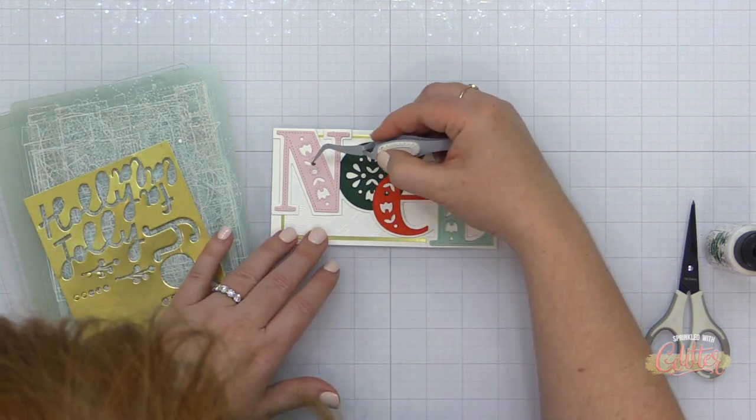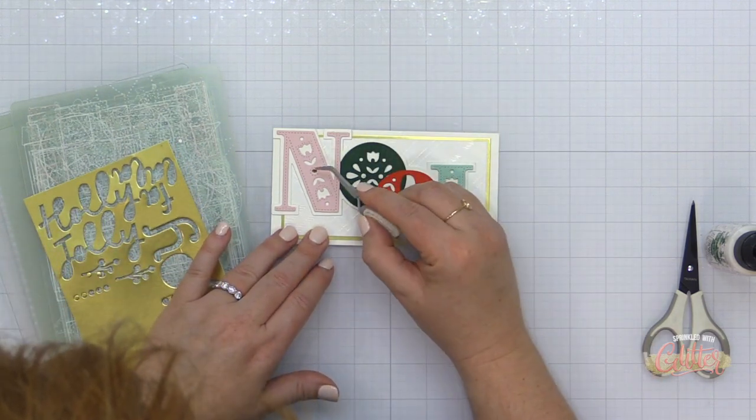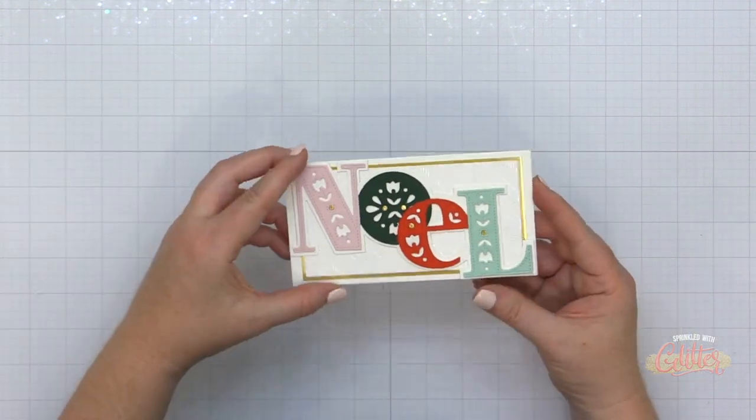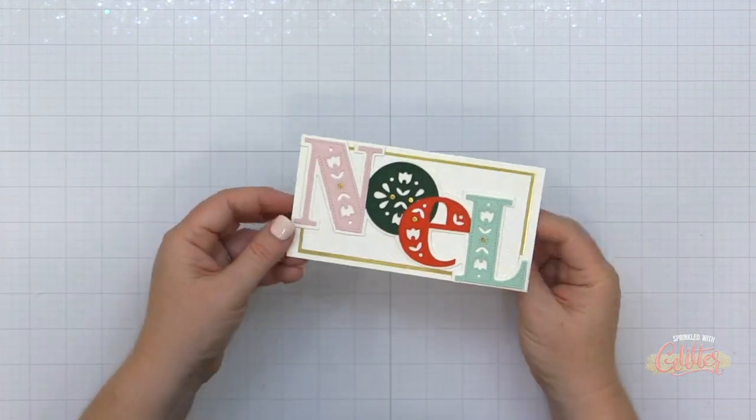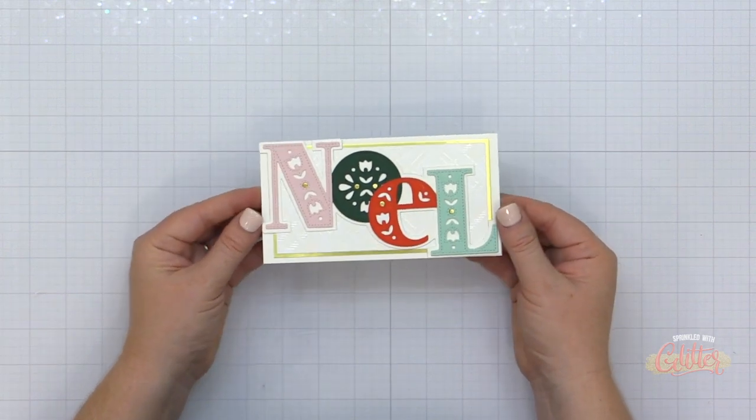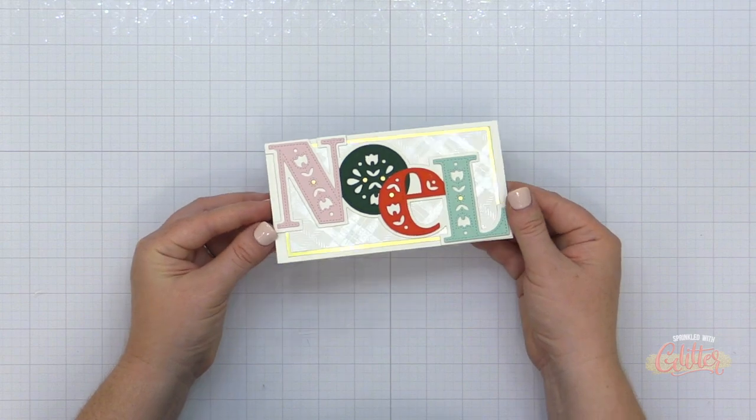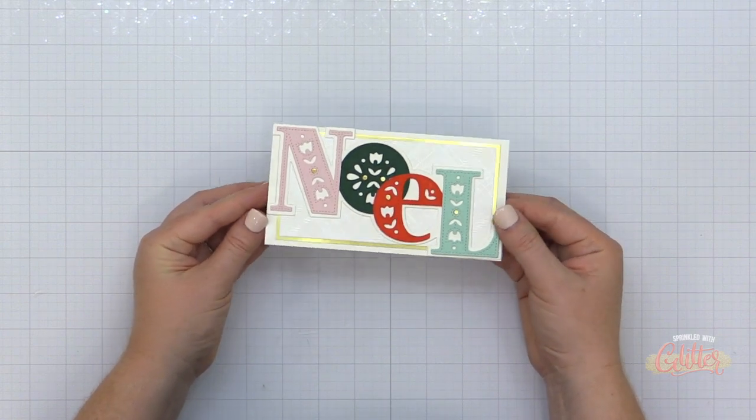Then I used the die from the die set that cuts all the little dots out. I die cut that from some gold cardstock and I added those pieces into those bigger polka dots on the letters. And that finishes off my card for today featuring the Nordic Noel die set.